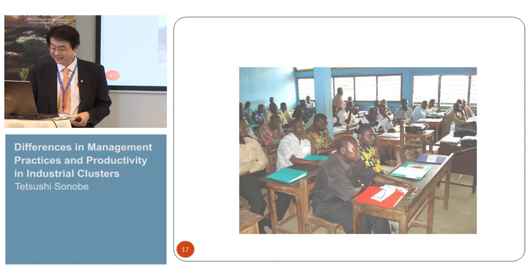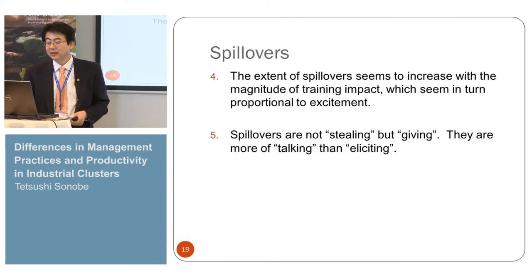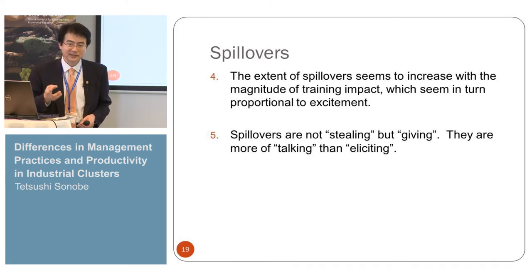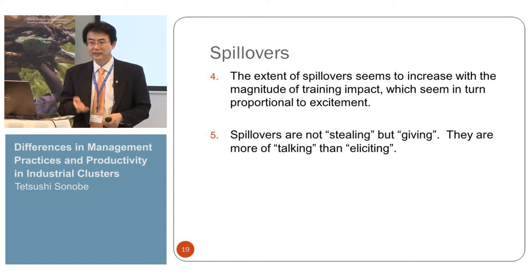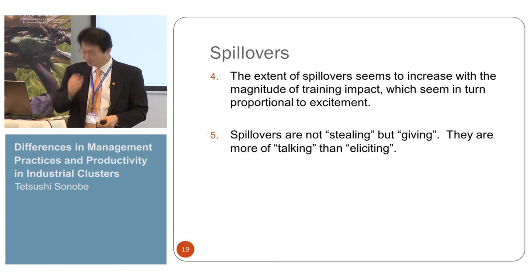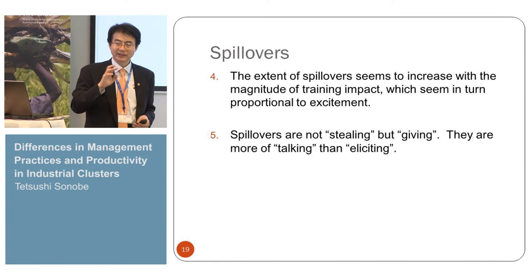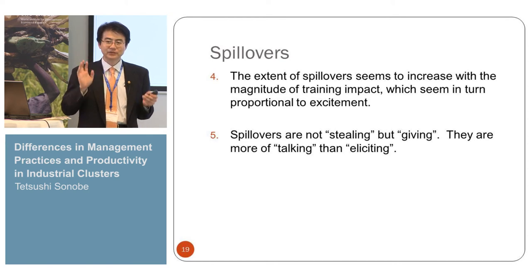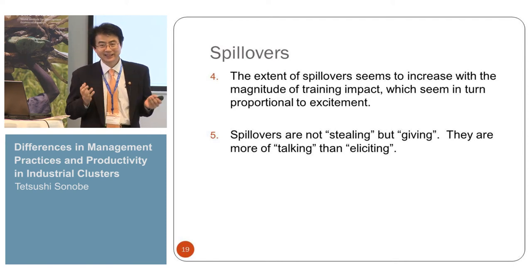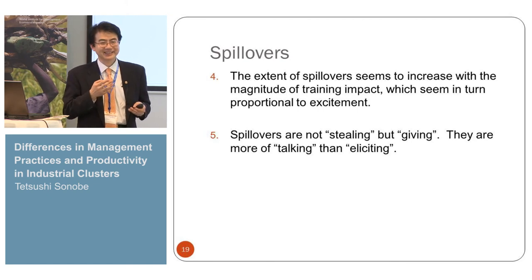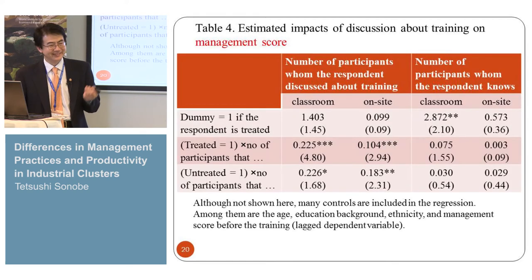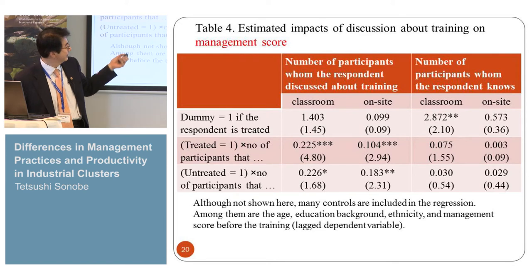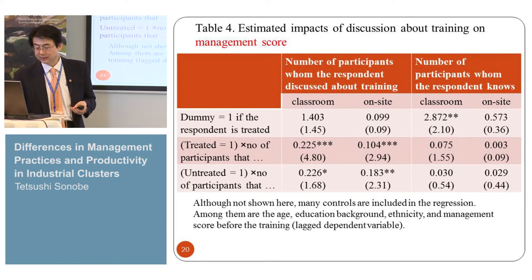Of course, the impact depends much on the design of the training, and this has not yet been studied — we don't know what kind of training is good for what type of people. If we design very well, the impact will be very strong. This is from the Ghana, Kumasi training. One of our new findings is that spillover is very strong — spillover from participants to non-participants. Interestingly, spillover is not about stealing information, but about giving information. Those participants who found the training very useful become excited and cannot stop talking about it. We have some primitive but very significant results suggesting that spillover takes place in this way.